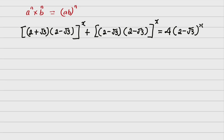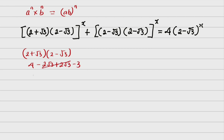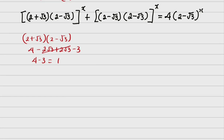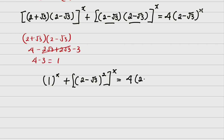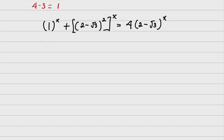When I work the bracket, (2 plus root of 3) multiplied by (2 minus root of 3) gives 4 minus 2 root 3 plus 2 root 3 minus 3. You can see that the middle terms cancel, so four minus three equals one. Having done that, this is going to be replaced by 1 raised to power x, plus (2 minus root of 3) all squared, everything raised to power x, equals 4 into (2 minus root of 3) raised to power x.